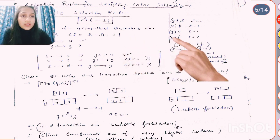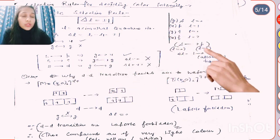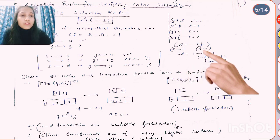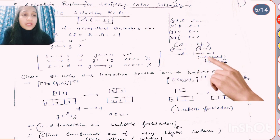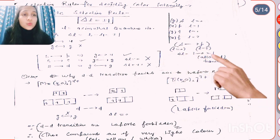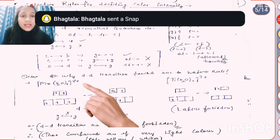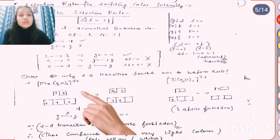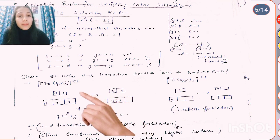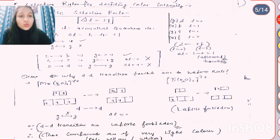To check the Laporte selection rule: for S orbitals, L = 0, and for P orbitals, L = 1. So 1 minus 0 equals 1, which means S to P transition is allowed. For example, in Mn(H2O)6 2+, Mn2+ has a 3d5 configuration with 5 electrons in 5 orbitals. If one electron undergoes transition to the upper level, delta L equals 0 because we only have D orbitals.